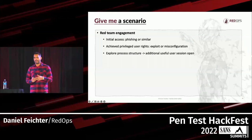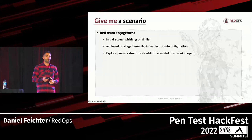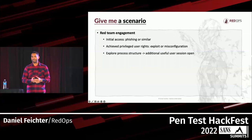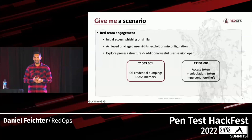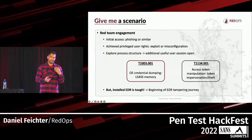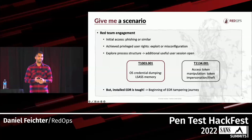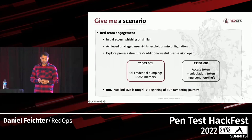Imagine the following scenario: you were already able to get initial access via a phishing email or similar, and you were also able to escalate privileges to a privileged user via an exploit or misconfiguration. Looking at the process structure on the compromised machine, you see an additional open user session. You can try to dump LSASS or steal a token from a process in that other user session. I tried a few different techniques, but a tough EDR was installed and I created too many alerts and was isolated by the blue team — reason enough to dig deeper into EDRs on Windows.